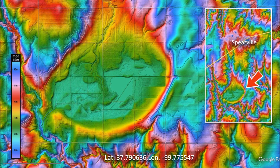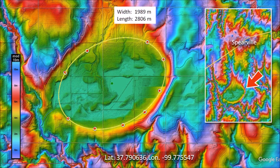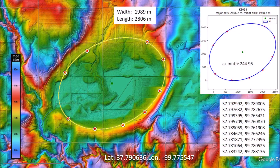Approximately 5 kilometers south of Spearville, Kansas, there is another elliptical basin. We select points along the perimeter where the green color of the center of the basin transitions to yellow. This basin has a length of 2,806 meters and it is oriented more toward the north than the other basins that we have examined.